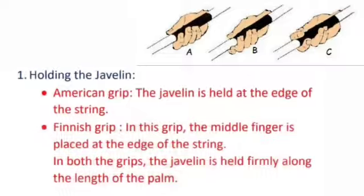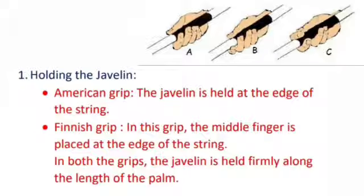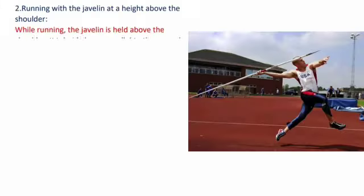Holding the javelin. American grip: the javelin is held at the edge of the string. Finnish grip: in this grip, the middle finger is placed at the edge of the string. In both grips, the javelin is held firmly along the length of the palm.